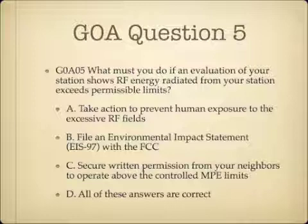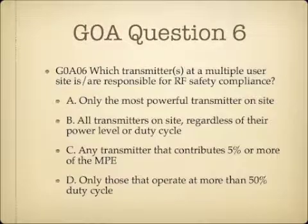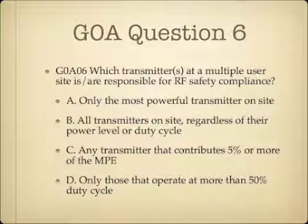Question 5. What must you do if an evaluation of your station shows RF energy radiated from your station exceeds permissible limits? A, take action to prevent human exposure to the excessive RF fields; B, file an environmental impact statement EIS 97 with the FCC; C, secure written permission from your neighbors to operate above the controlled MPE limits; or D, all of these answers are correct? Question 6. Which transmitter or transmitters at a multiple user site are responsible for RF safety compliance? A, only the most powerful transmitter on site; B, all transmitters on site regardless of power level or duty cycle; C, any transmitter that contributes 5% or more of the MPE; or D, only those that operate at more than 50% duty cycle?